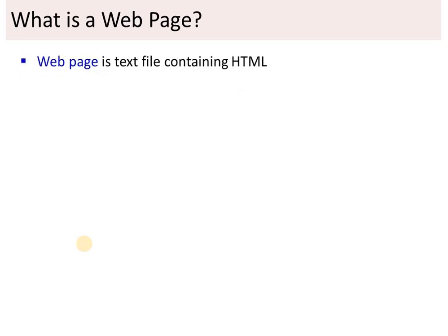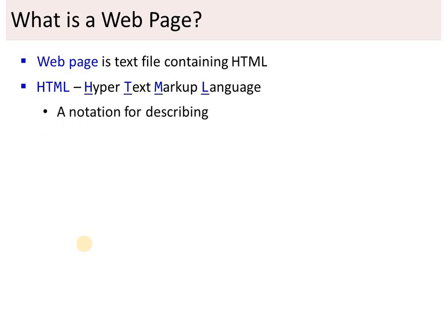A web page is a text file containing HTML. HTML stands for Hypertext Markup Language, which is a notation for describing document structure — that is, semantic markup. Document structure is like the structure of a book: a book has a cover page, chapters divided with titles and paragraphs. Similarly, a web document has a title, heading, and sections.